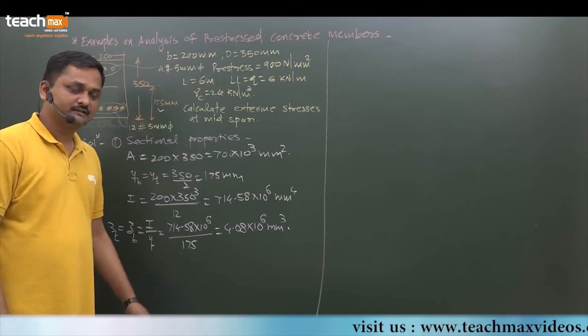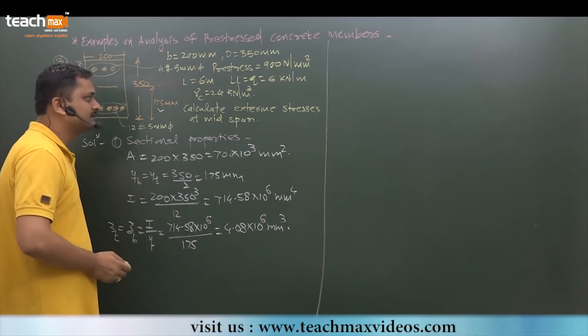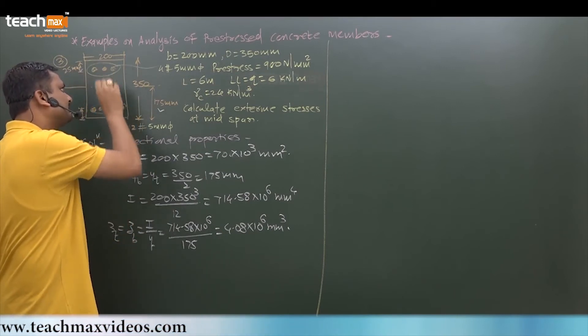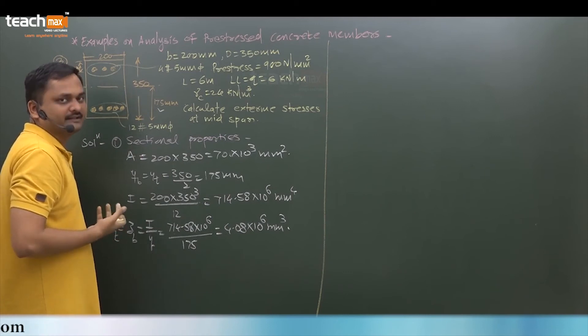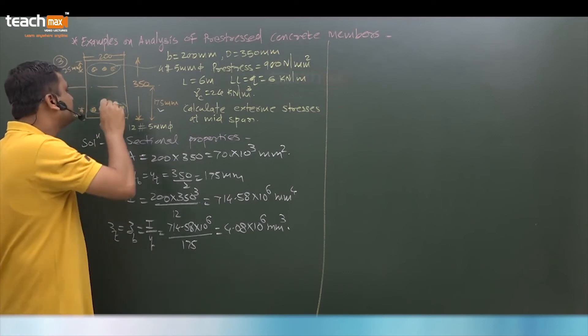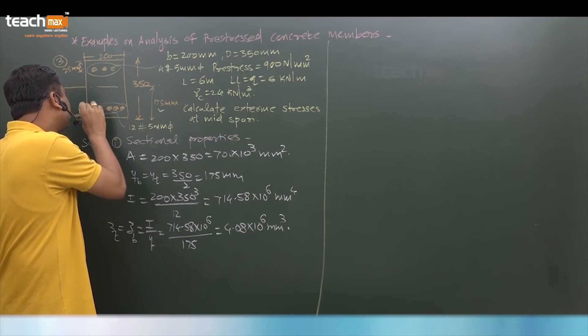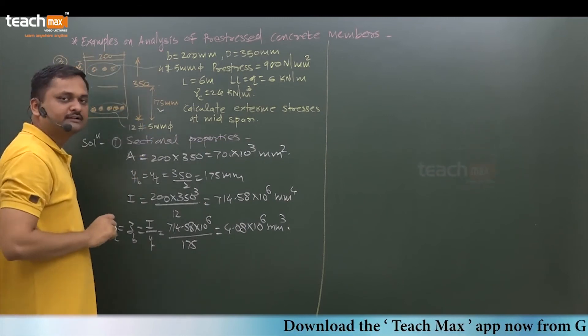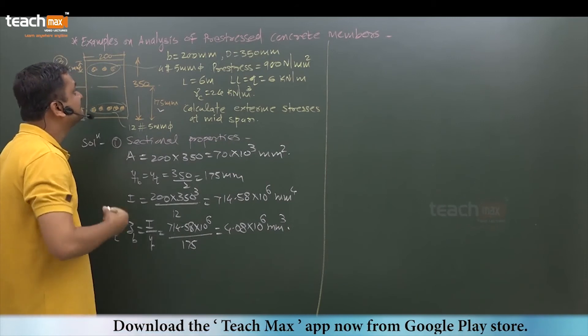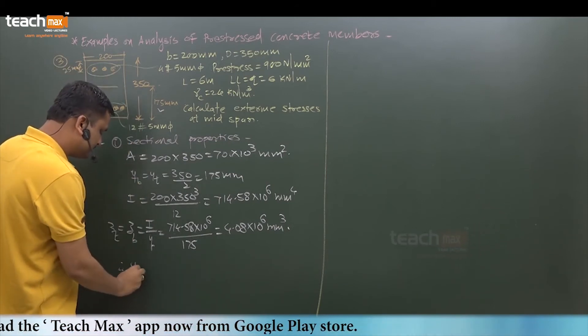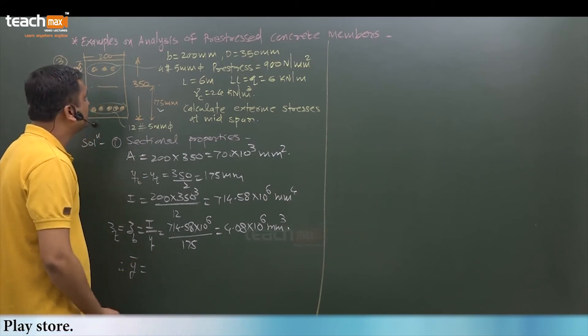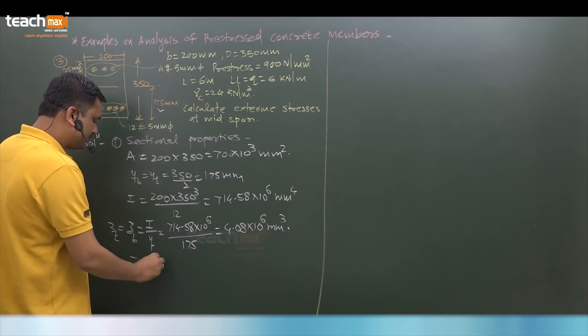We have to find out pre-stressing force and its eccentricity. First of all, find out CG of these wires - where these wires will concentrate. We know 12 wires are provided at 65mm from soffit and 4 wires are provided at 25mm from top. We have to find out CG of these 16 wires.